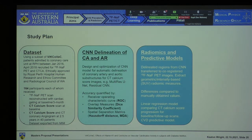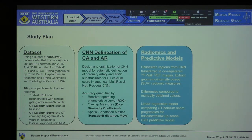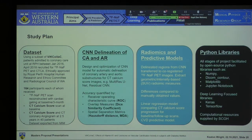The next step is extraction of radiomic measures such as SUV, as well as development of predictive models. The CT-delineated regions will be co-registered with the PET images — MIM does that automatically — and then we'll compare results with manual delineations, as well as develop linear regression models to quantify CAC progression over three months. I'll be using Python libraries such as NumPy for maths, DICOM, PyDicom, DICOM Contour for extraction of contours from DICOM files, Matplotlib for visualization, and deep learning frameworks such as Keras and TensorFlow. Computational resources are supplied at the hospital.